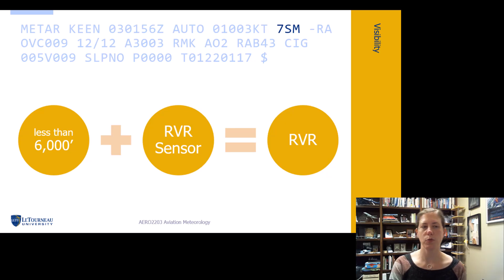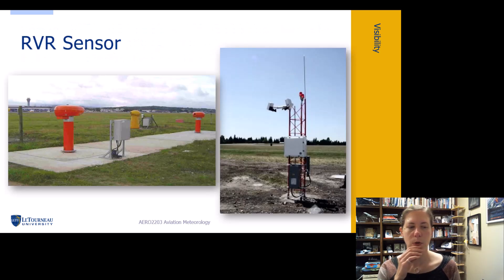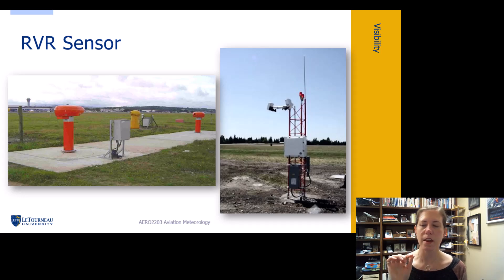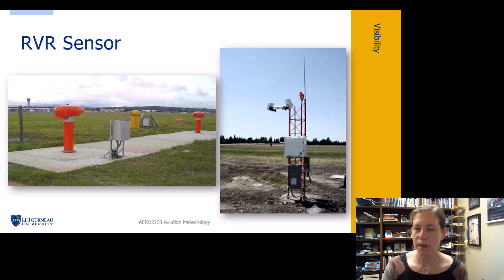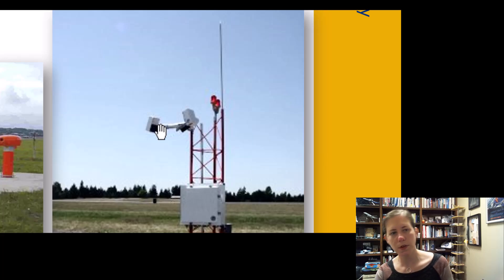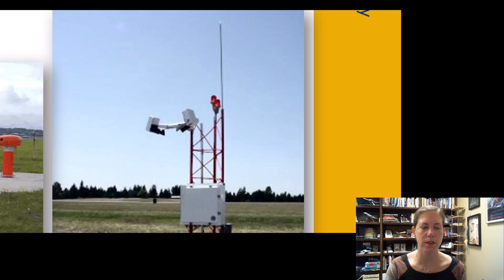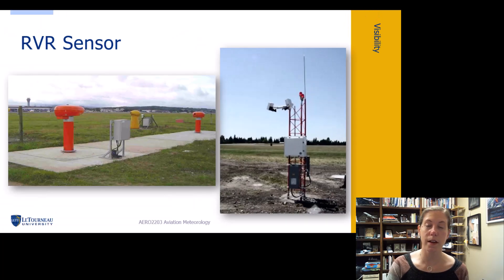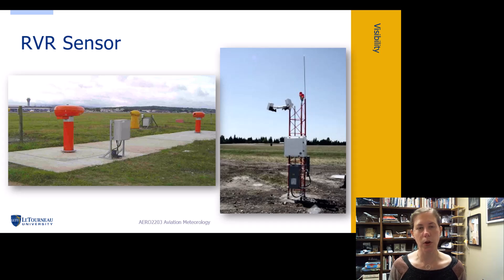Runway Visual Range is a sensor that records how far it can see down the runway based on light reflecting within the instrument. Older types looked for an actual light sitting off the runway. Newer systems flash a light out of one box and the other box receives that light — if it can see the light, it figures out the distance. You can have up to four of these on a runway. East Texas Regional only has one, while long runways like Denver International have four RVR sensors.